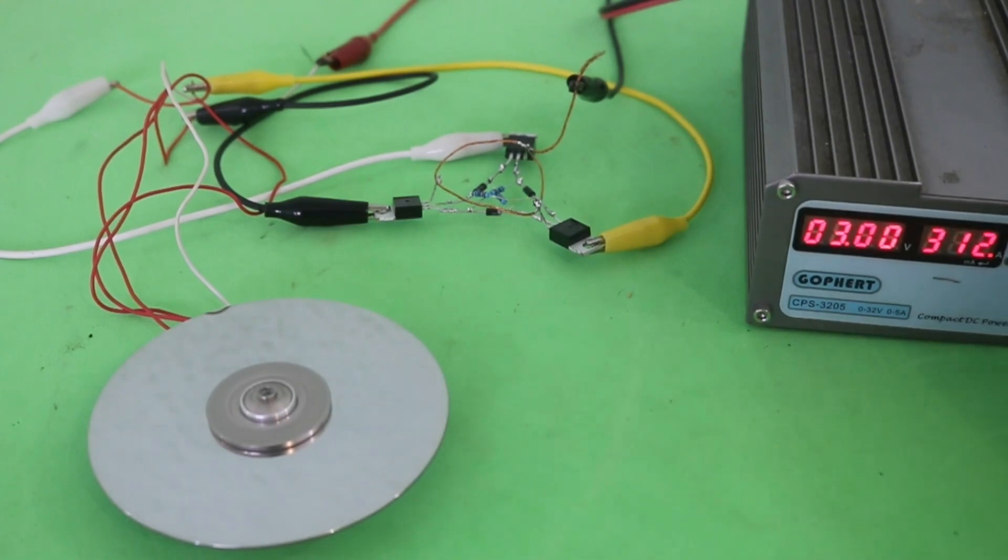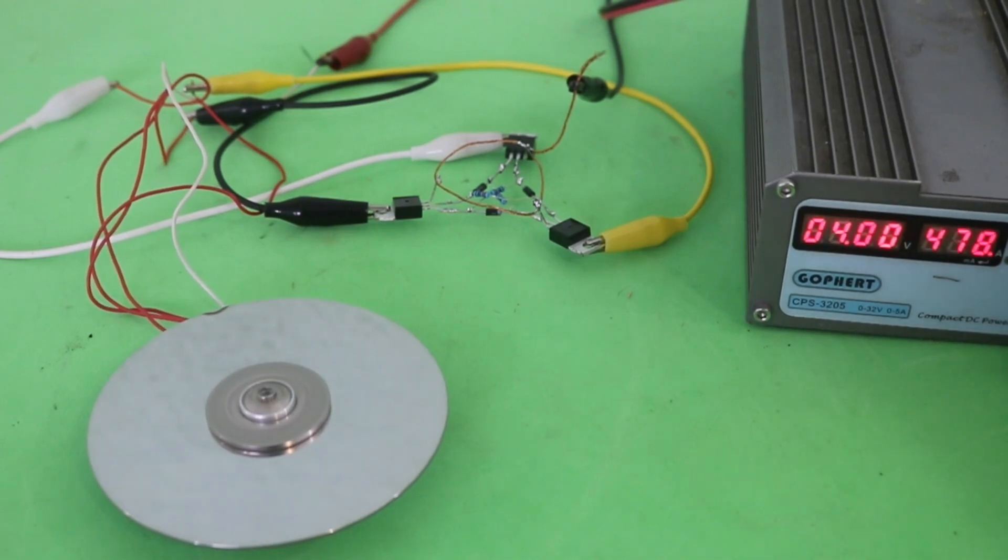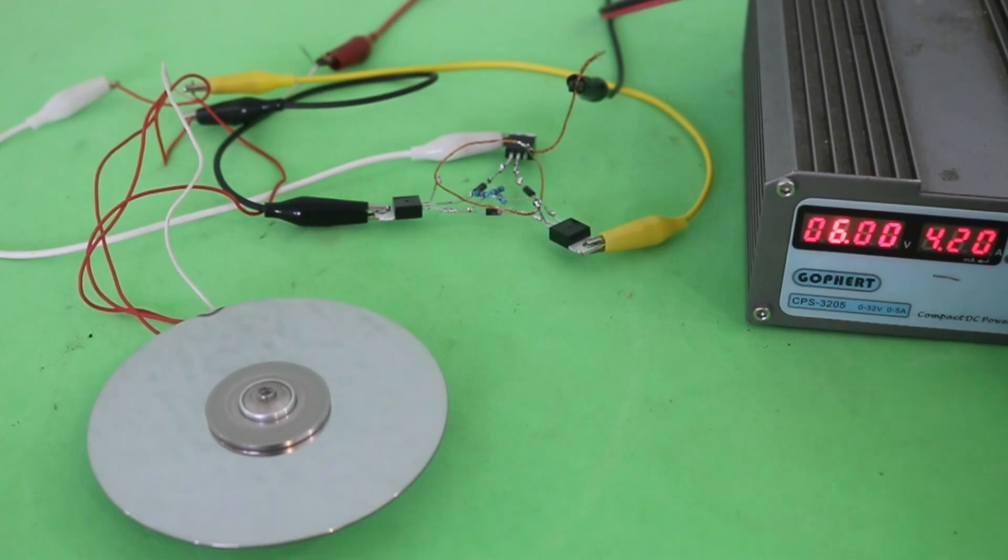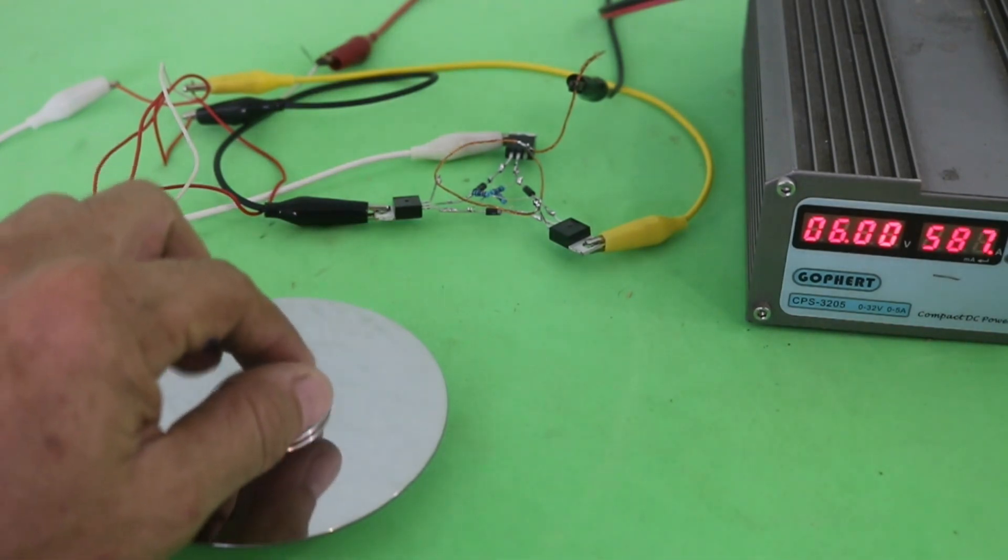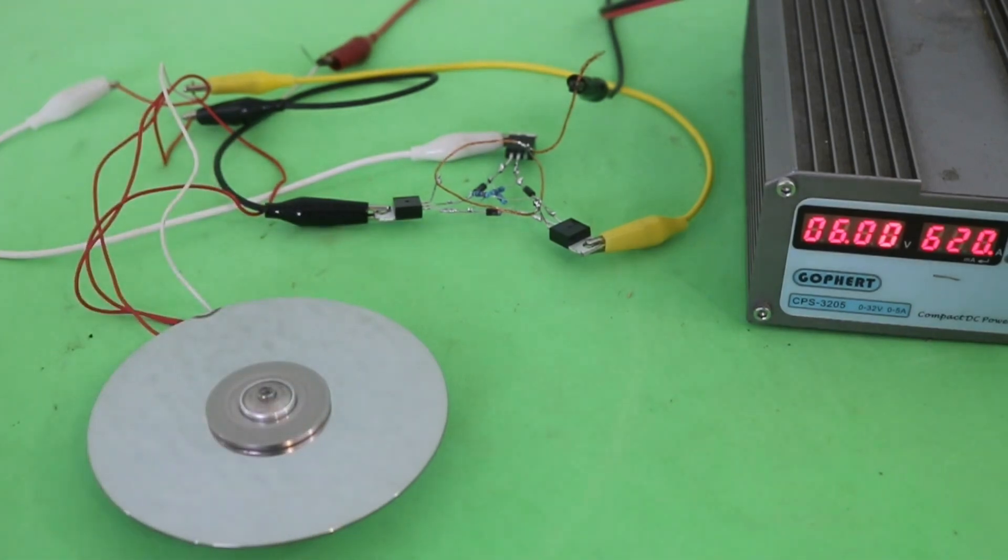I will increase the voltage, 4 volts and of course the speed of the motor increases, 5, 6 volts. As you can see it's going very fast. The motor does have torque.